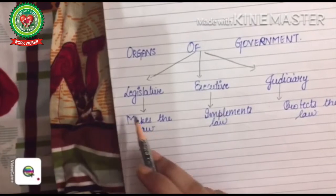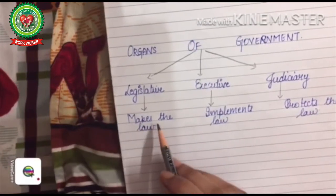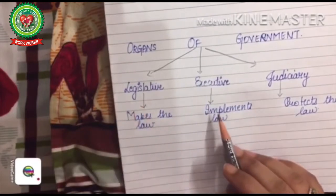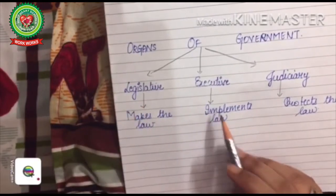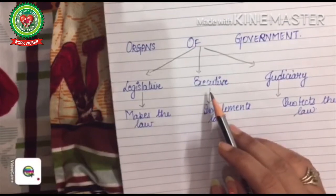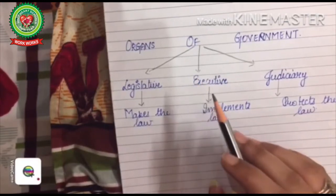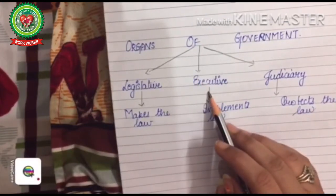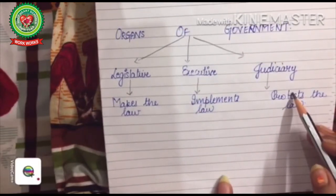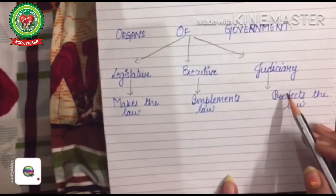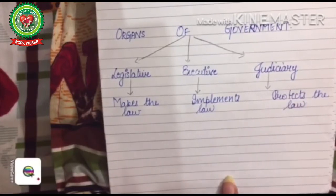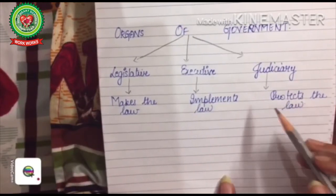To recap: the body of the government which makes the law is the Legislature. The organ of the government which helps the people to follow the laws is the Executive. And if the laws are violated, the organ that helps provide justice is the Judiciary.